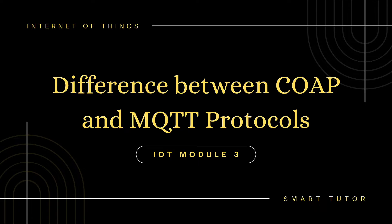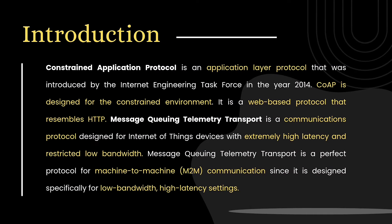What are the differences between CoAP and MQTT protocols? CoAP means Constrained Application Protocol. This is an application protocol introduced by the Internet Engineering Task Force in 2014. CoAP is designed for constrained environments. It is a web-based protocol, similar to HTTP. MQTT stands for Message Queuing Telemetry Transport. It is a communication protocol.